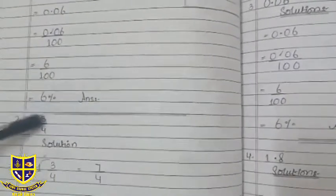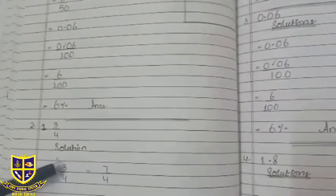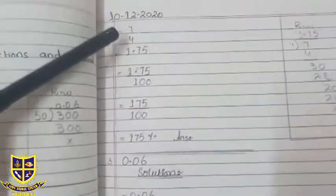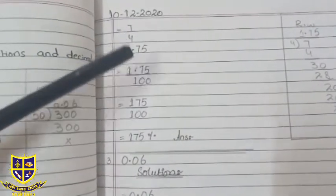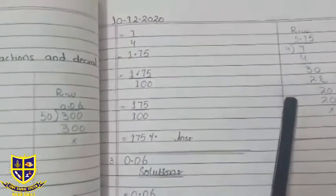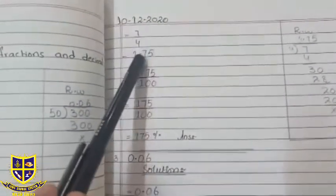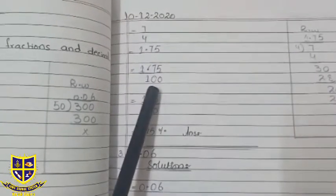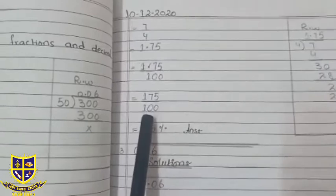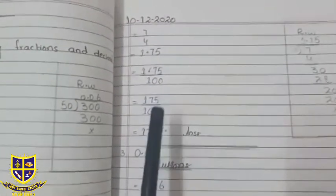Question number two: we have a mixed fraction, so first we have to convert it to a simple fraction. We convert it to a simple fraction and then to a decimal. 1.75 — we convert it to a simple fraction, then divide by 100. So we get a simple fraction, and when we have 100 in the denominator, the numerator number becomes the percentage with a percent sign.